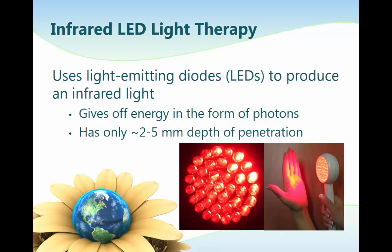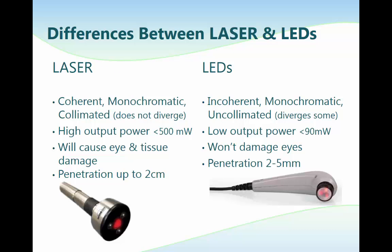Light-emitting diodes, or LEDs, are special types of semiconductor diodes that emit visible light when an electrical current passes through them. As electricity passes through the diode, it gives off energy in the form of photons. The wavelength and energy given off — and thus the color of the emitted light — is determined by the chemical composition of the doping materials. LED lights have a depth of penetration of 2 to 5 millimeters. One might think that the light from semiconductor-based lasers and LEDs is the same, but this is not true.